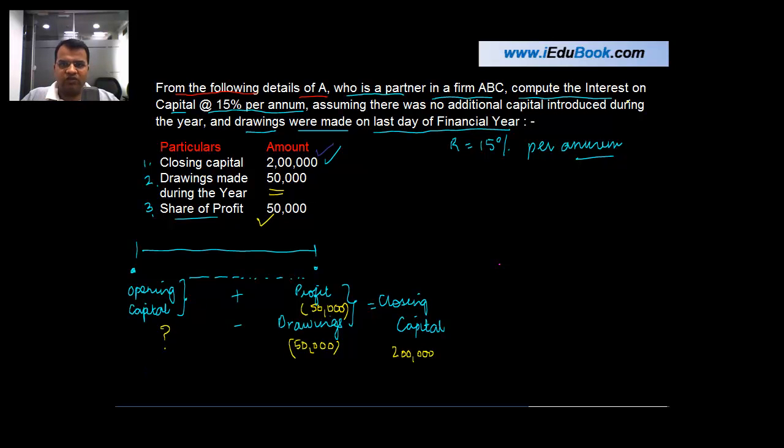Now you have to compute interest on capital at the rate of 15% per annum and you are told there is no additional capital which is introduced during the year, which means that the entire balance which is this opening balance, let's call this as x, is the balance which is there and you have to calculate interest on this at the rate of 15% per annum. Now how do you calculate this x? It's very simple. I have already given you the complete answer. So we know that x plus profit during the year 50,000 minus drawings made during the year is equal to 2 lakh.